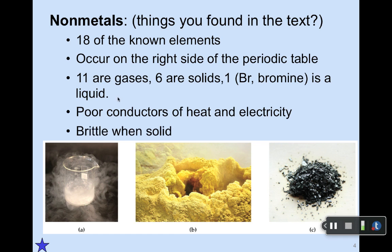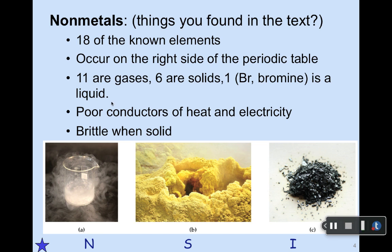Non-metals tend to be brittle when solid, but as you can tell from the sample on the left, which is nitrogen, it does not occur as a solid in ordinary conditions. The second one in the middle is sulfur, which is indeed quite yellow as a solid — very definitely brittle and can't be pounded into sheets like metals. The third one is iodine, which looks like little gray silvery things, very different from the other two non-metals. So they vary quite a bit in their characteristics.